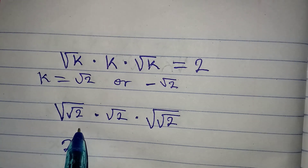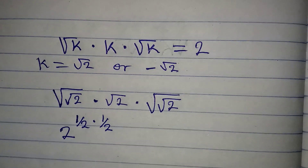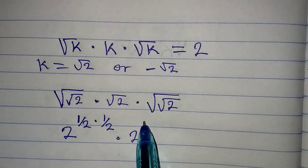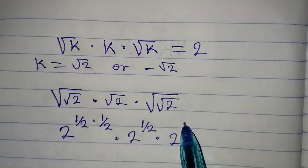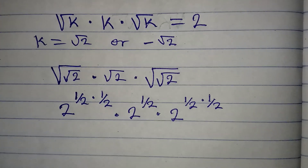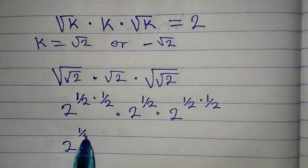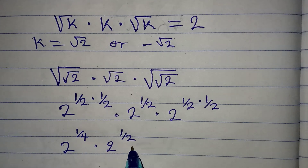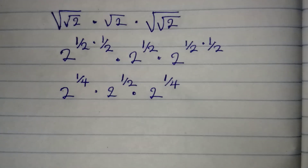Square root of square root of 2 is the same as 2 to the power of 1/2 times 1/2. Then multiplied by square root of 2 which is 2 to the power of 1/2, and square root of square root of 2 is again 2 to the power of 1/2 times 1/2. Simplifying, I have 2 to the power of 1/4, multiplied by 2 to the power of 1/2, multiplied by 2 to the power of 1/4.